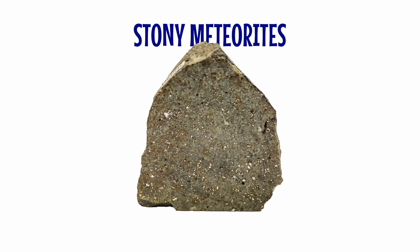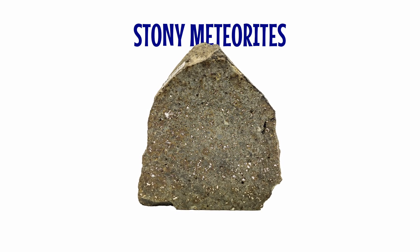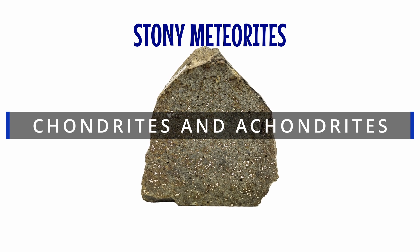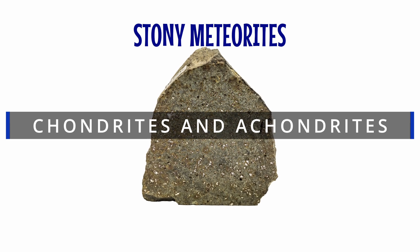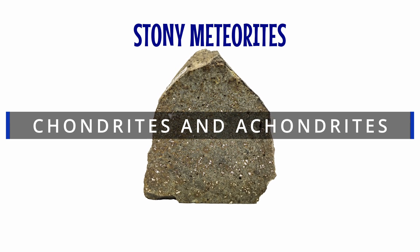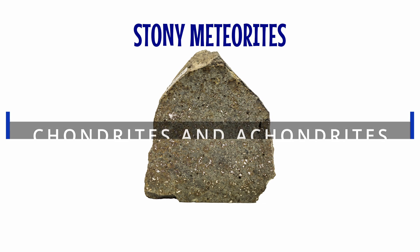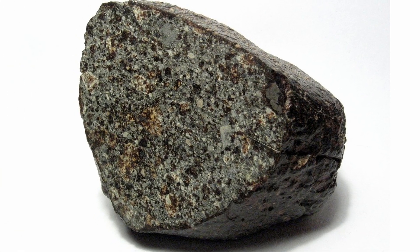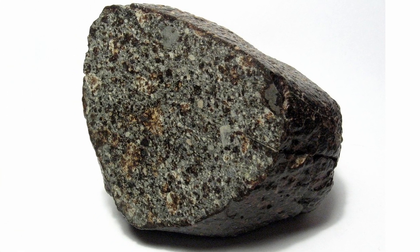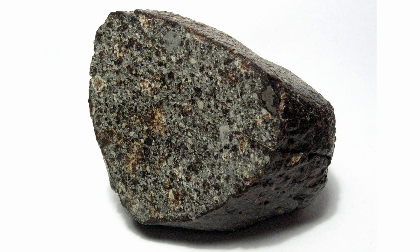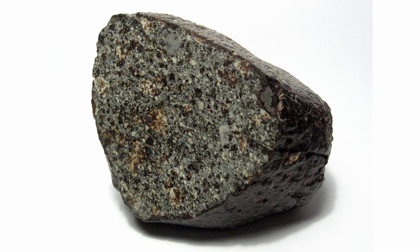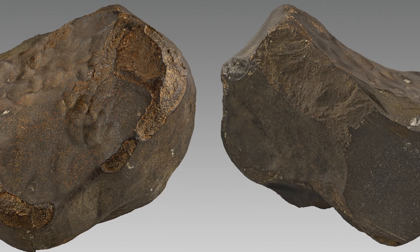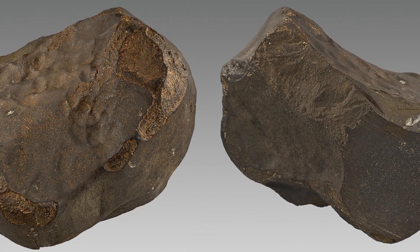The majority of meteorite finds are stony meteorites, consisting mostly of silicate minerals. There are two main types of stony meteorite: chondrites, some of the oldest materials in the solar system, and achondrites, including meteorites from asteroids, Mars, and the Moon. Both chondrites and achondrites have many subgroups based on their compositions, structures, and the minerals they contain.